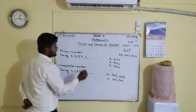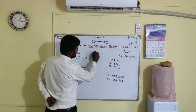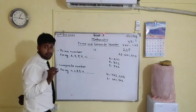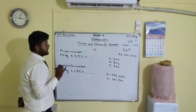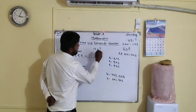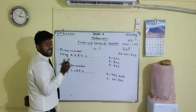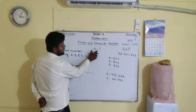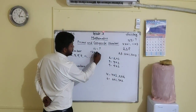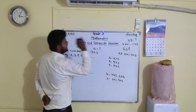Now students — 13, is 13 a prime number or a composite number? 13 is a prime number, because it has got only two factors, that is 13 and 1.